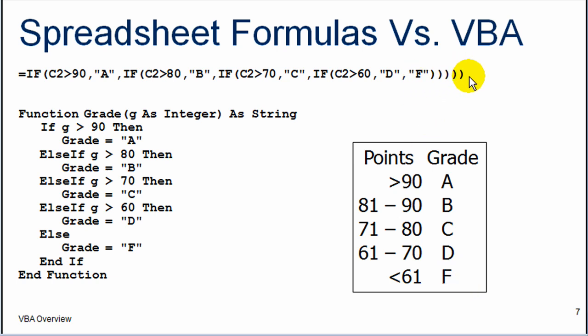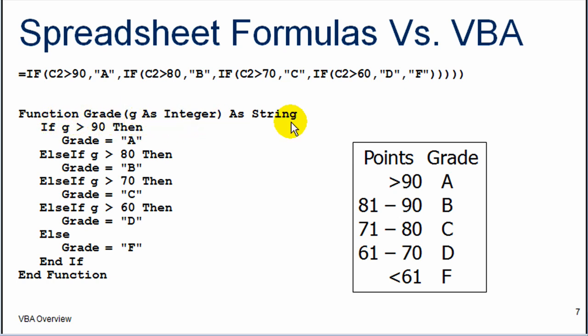Option 1: at the top we have the spreadsheet formula. We can actually compute the letter grade using this formula — this is one way to do that. Another way is by writing a VBA function. Here is my VBA function. The name of the function is 'grade'. It takes one integer and it returns a string — a letter grade. And depending on what you pass to it, it will decide what the grade should be: whether A, B, C, D, or F. In the next slide, I will show you how to use each one of these approaches in Excel.